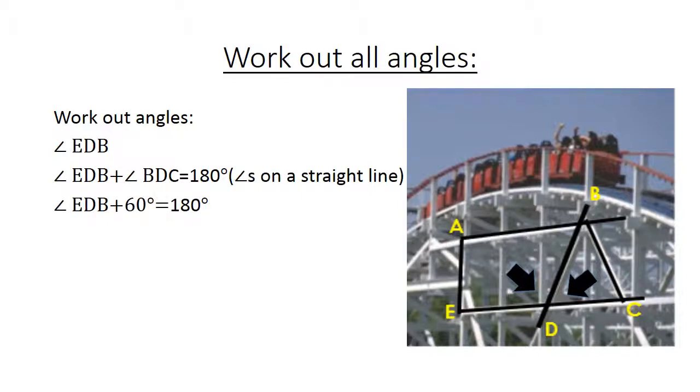Angle EDB plus 60 degrees equals 180. From the previous slide we've worked out that triangle BCD is an equilateral triangle. That's why the 60 degrees is there.